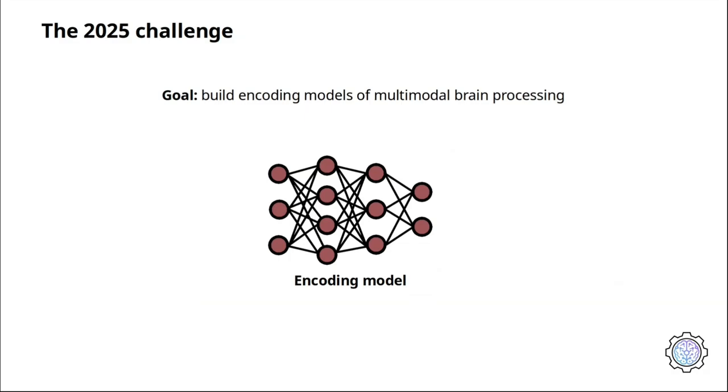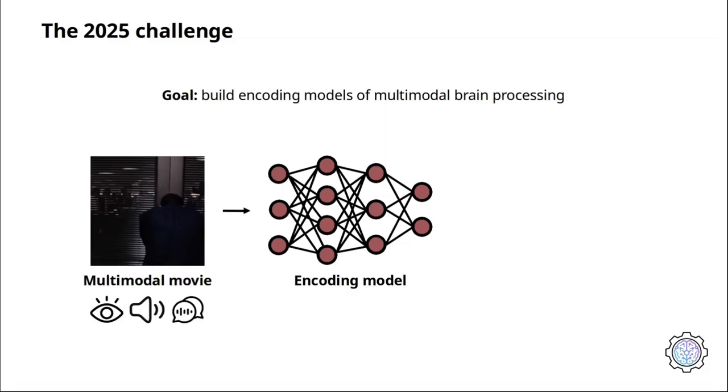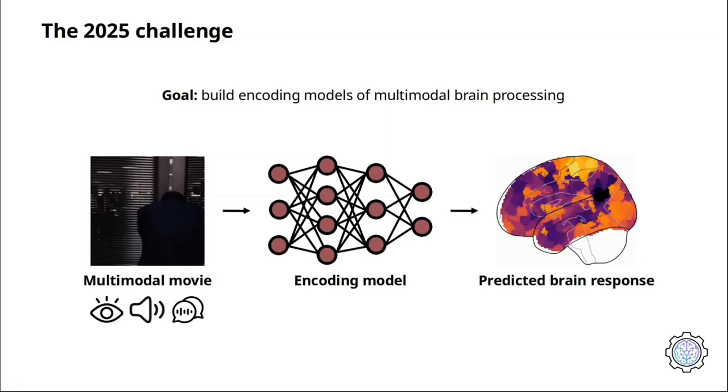In this year's edition of the Algonauts Project Challenge, we ask you to build encoding models of multimodal brain processing, where encoding models are predictive algorithms that take stimuli as input, such as multimodal movies, and output the corresponding brain responses.